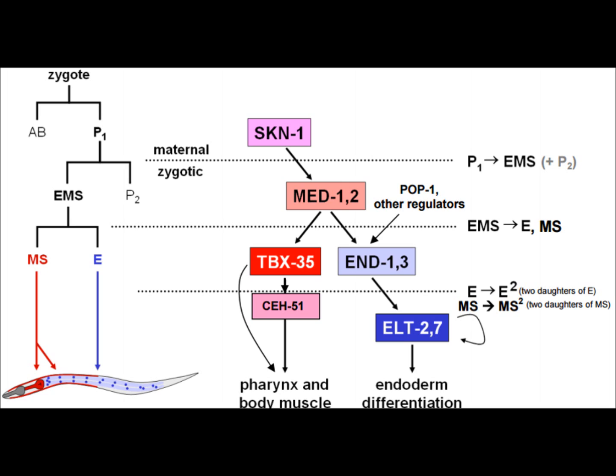Shown here is a flow chart of transcriptional regulators in C. elegans. MOM1 and 2 is actually present in the EMS cell. Interestingly enough, MOM1 and 2 activates both TBOX35 and END1 and 3 in MS and E respectively.